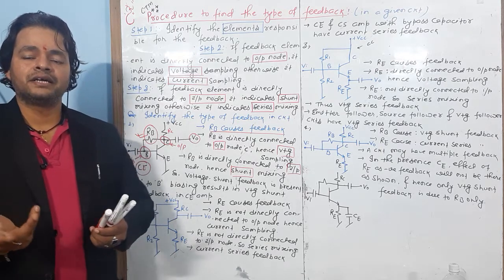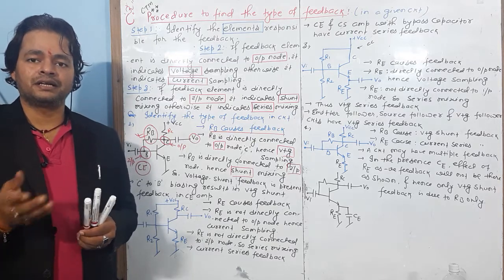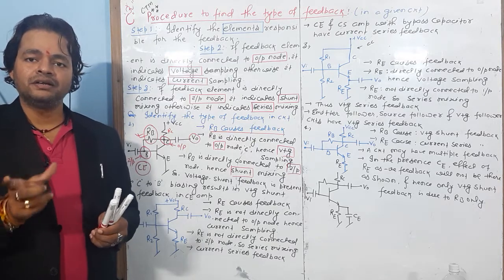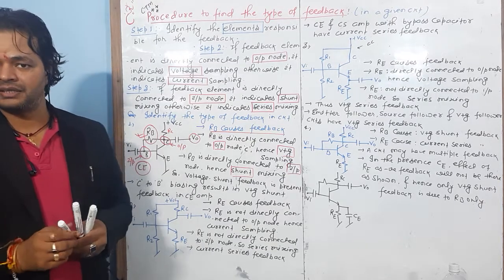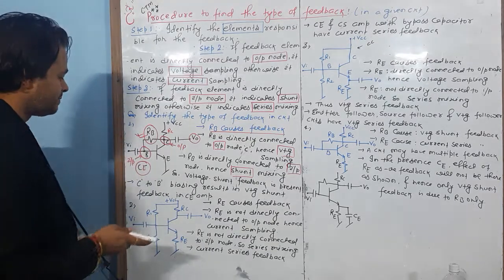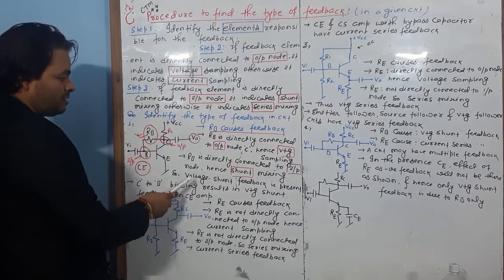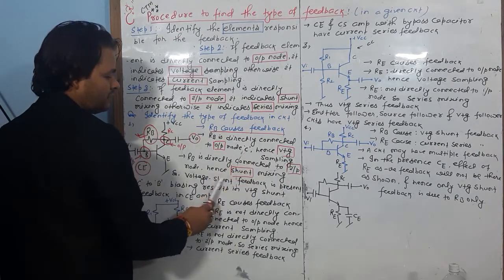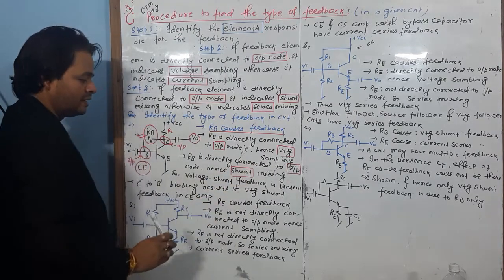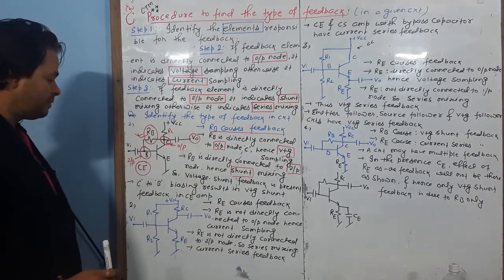If both are directly connected, then it is voltage shunt feedback. If neither is directly connected, then it is current series feedback. Series means measuring current; shunt means measuring voltage. So the feedback here is voltage shunt — based on the input and output node connections.